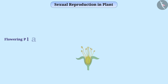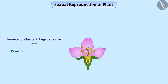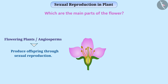Flowering plants, also called angiosperms, produce offspring through sexual reproduction. The reproductive organs of these plants are found in flowers. Can you tell me which are the main parts of the flower?